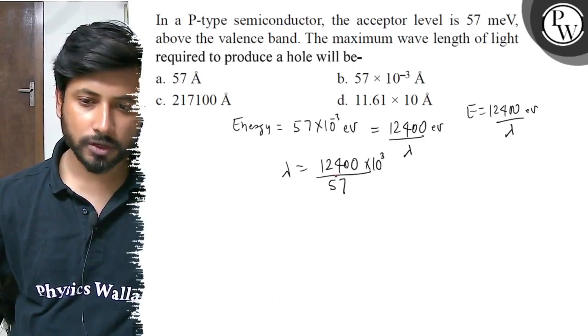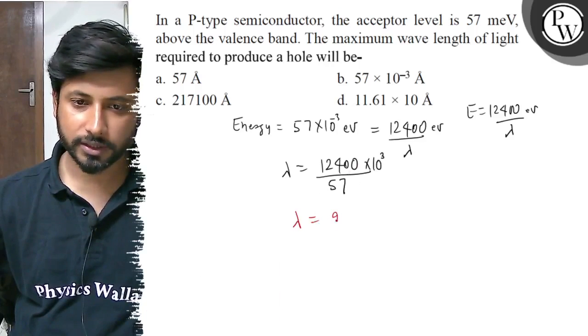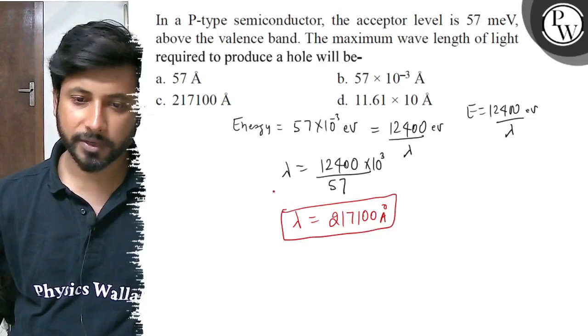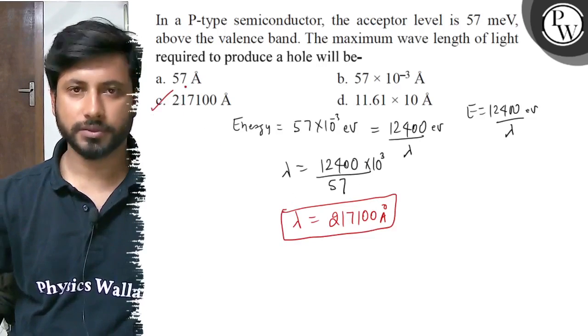And when you solve this, here you have lambda value 217100 angstrom. You have lambda value. So, final answer is option C. Best of luck. Thank you.